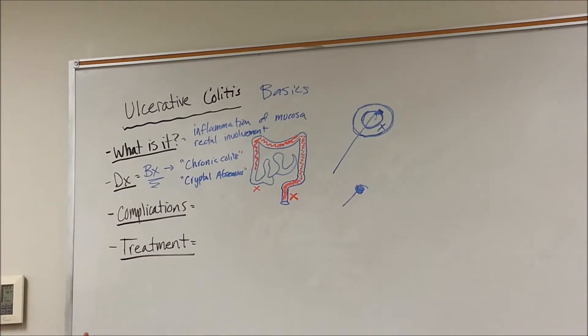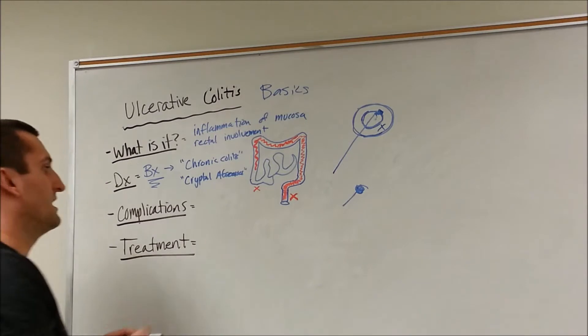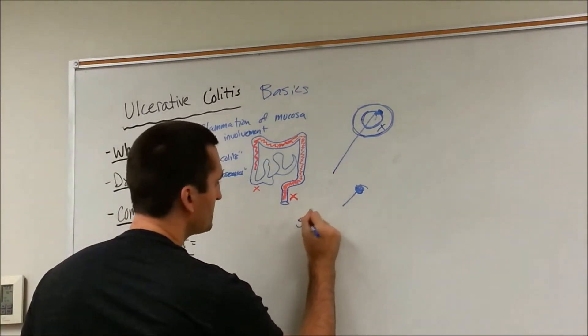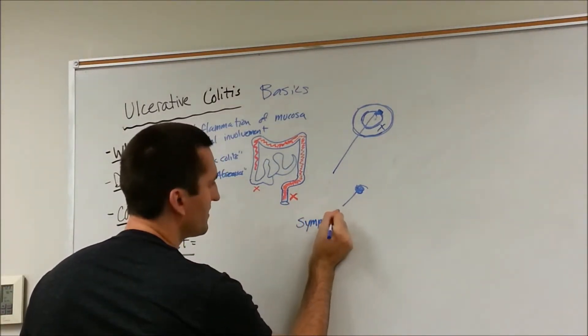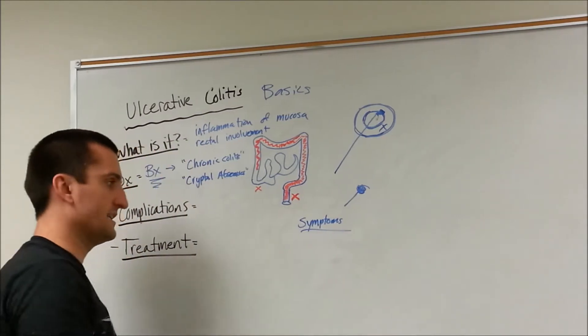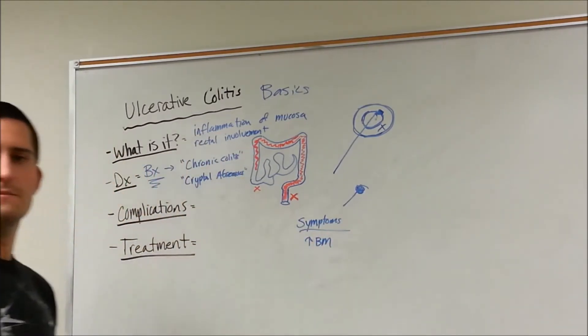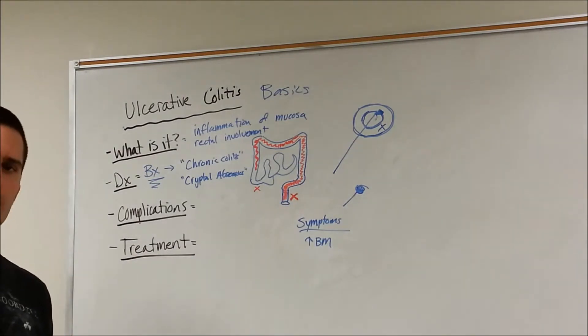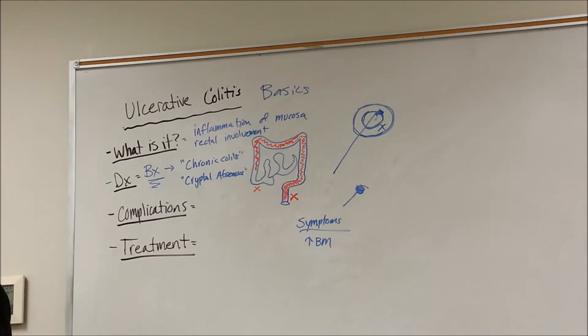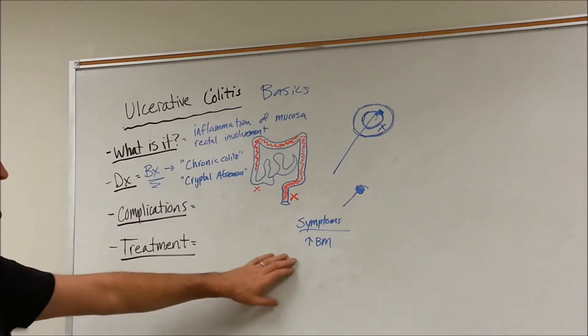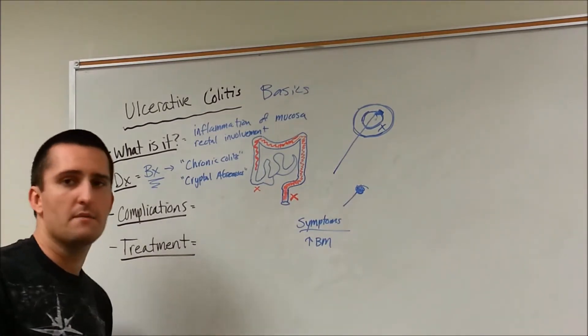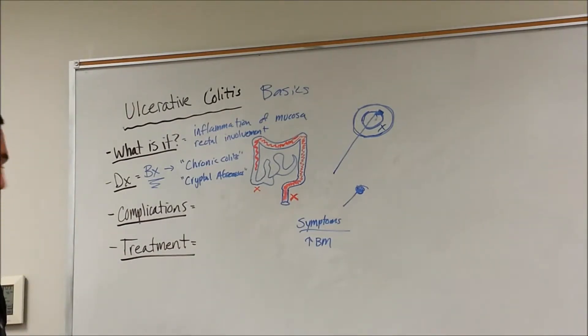So, how does ulcerative colitis actually present? That's going to be a very important thing. So, some symptoms of ulcerative colitis. You're going to see increased bowel movements, possibly. Meaning, an average person has one bowel movement a day. Some people go every other day. It kind of depends per person. However, in ulcerative colitis, you may see three bowel movements per day, four bowel movements per day. Up to ten, twelve, fifteen.